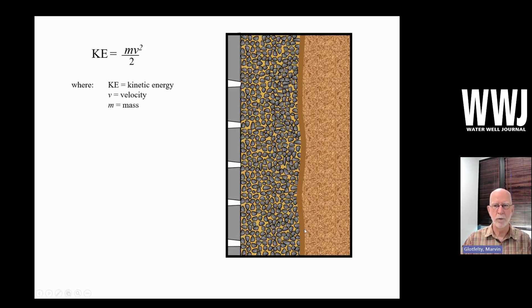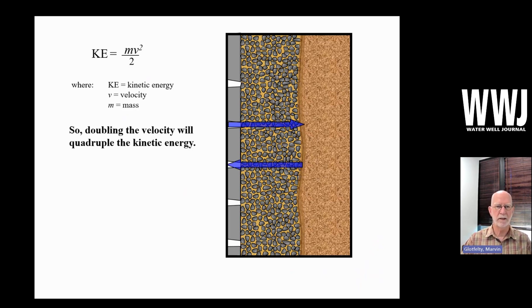So the work that we're doing to remove the wall cake can be expressed as kinetic energy. Kinetic energy equals mass times velocity squared divided by two. So we have a relationship between kinetic energy and velocity that is a squared relationship. So if we double the velocity, we will quadruple the kinetic energy. Similarly, we cut the velocity in half, we're going to reduce the kinetic energy by a factor of four. So it's important to make note of that velocity.